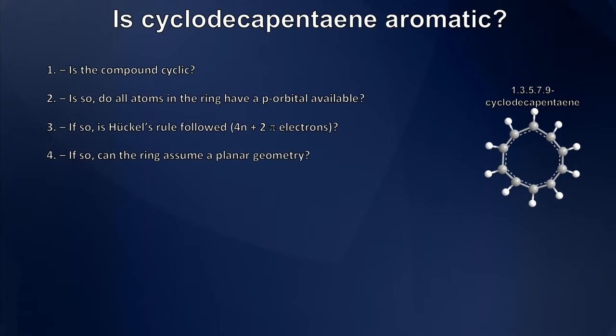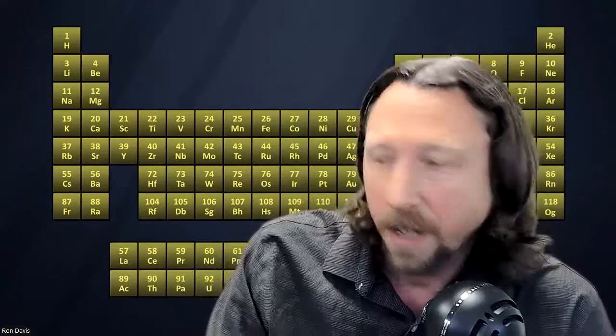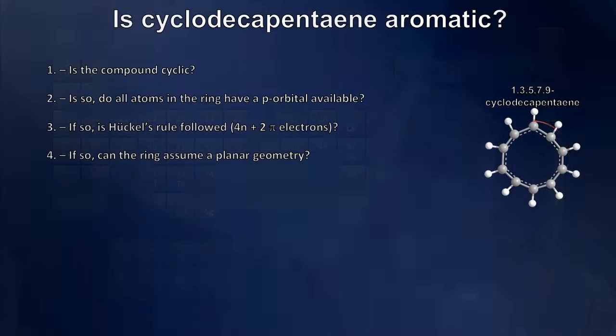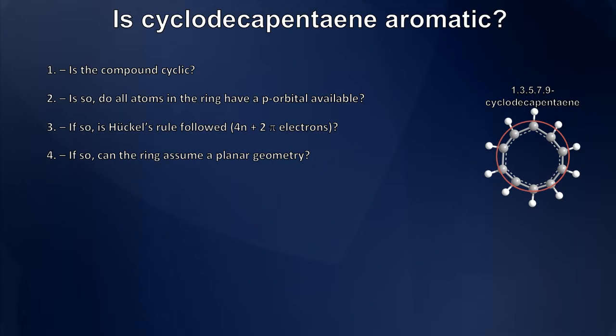Is the compound cyclic? Well, quite clearly from this representation I've got here, this would be all cis cyclodecapentaene. As you can see here, there is a continuous cyclic structure within that compound. So yes, it is. It passes the first test.